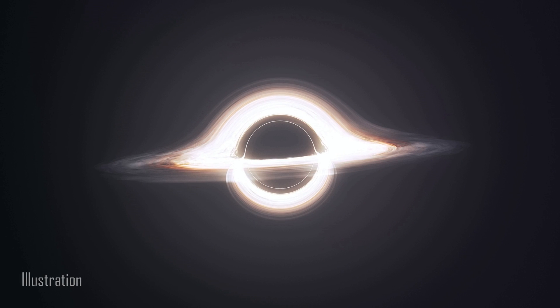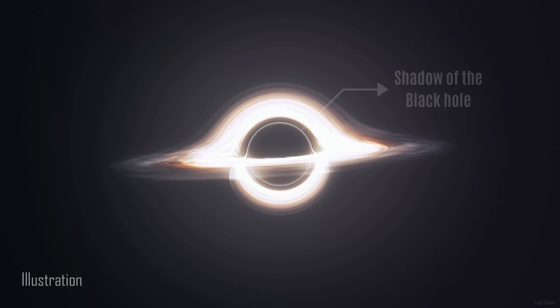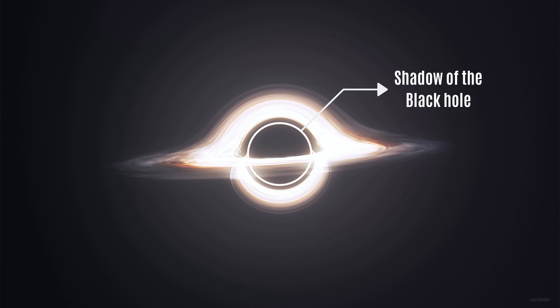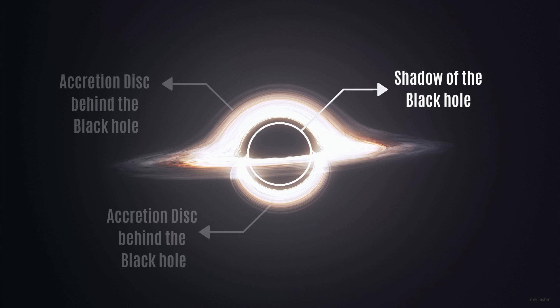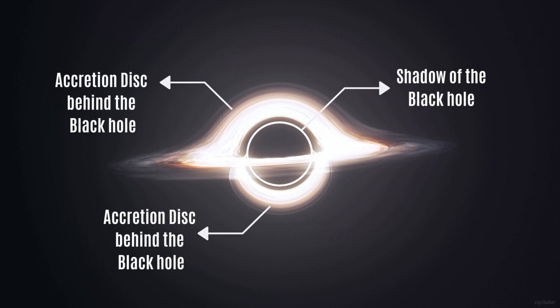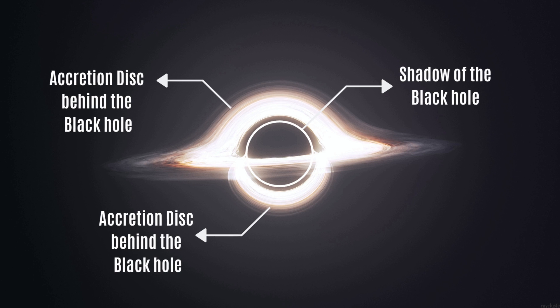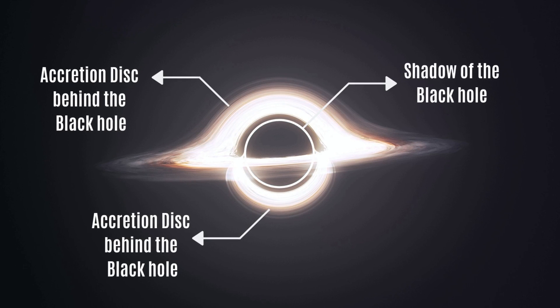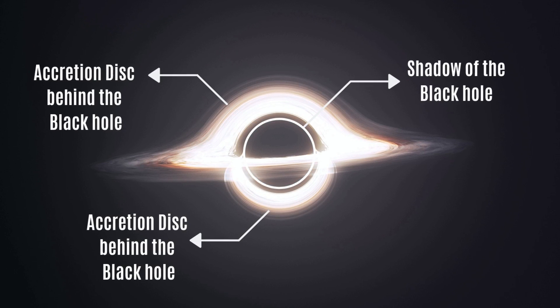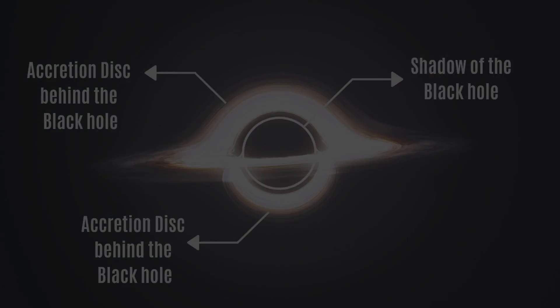So finally, looking at the black hole should look something like this: a shadow of the black hole, inside which is the event horizon, is surrounded by an accretion disk which appears bent because light from it bends around the black hole. You can see the accretion disk that is lying on the other side of the event horizon.